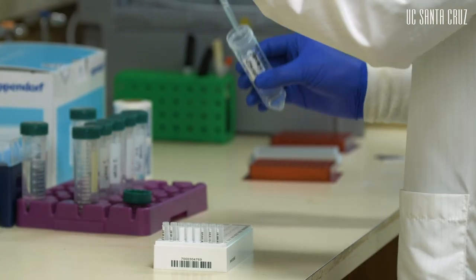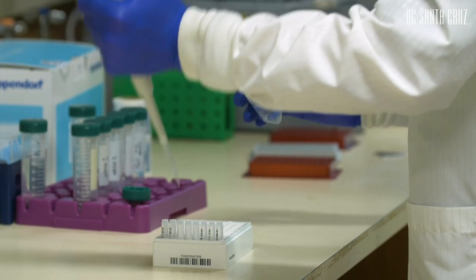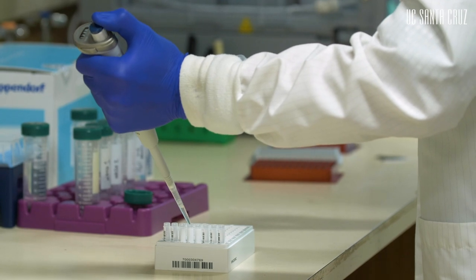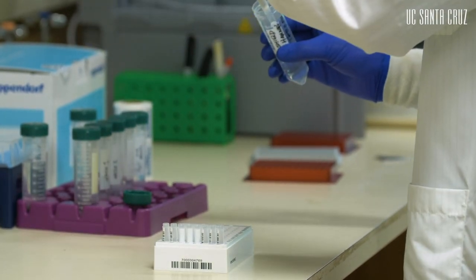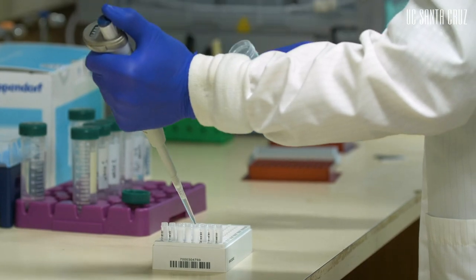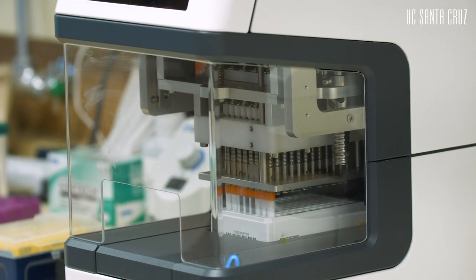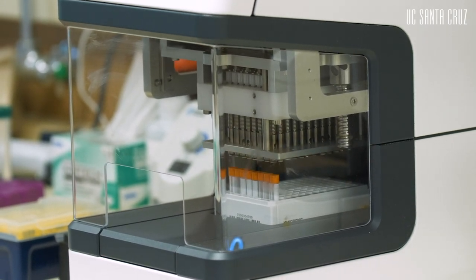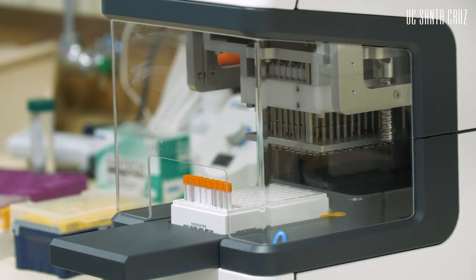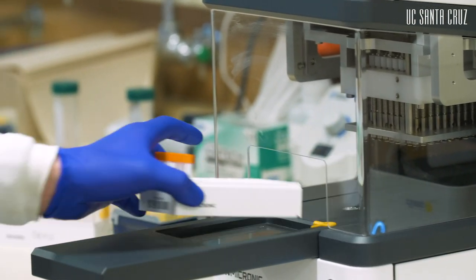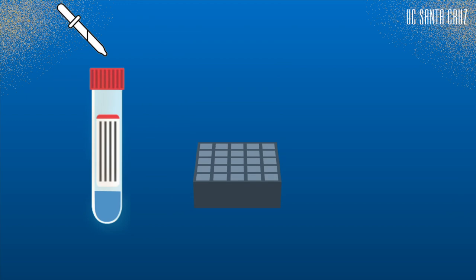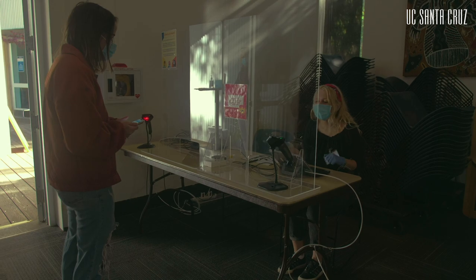RNA shield is dispensed into 1.4 milliliter 2D pre-barcoded tubes. The barcodes allow us to process samples in a high-throughput manner to instantly know which samples are coming back to us. The test kits are built in-house in our lab. The kits can be assembled in minutes using our Agilent Bravo, which is a 96-well liquid handling robot that can very accurately dispense liquid. The kits include tubes filled with RNA shield, racks, and swabs. Once kits are assembled, they are sent to providers to collect patient samples.